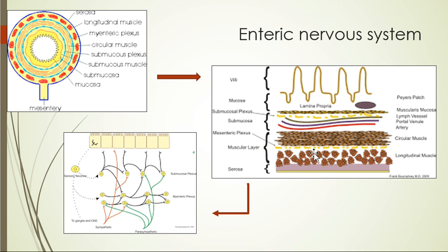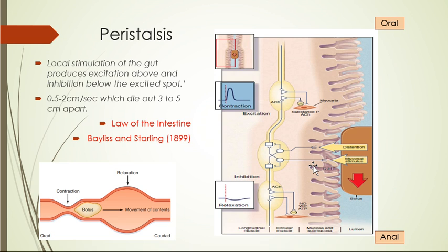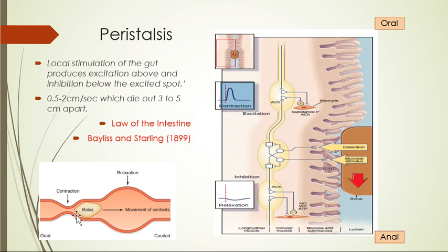The first movement is peristalsis. Peristalsis means that local stimulation of the gut produces excitation above and inhibition below. When a food bolus enters the gut, it locally stimulates the enteric nervous system — both plexuses — leading to contraction above and relaxation below the bolus.